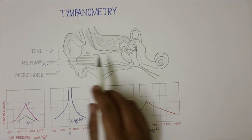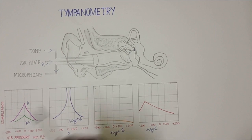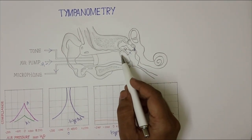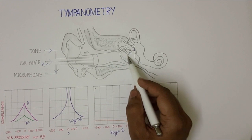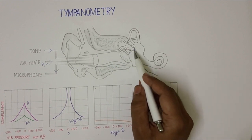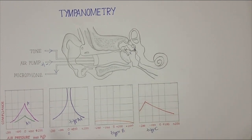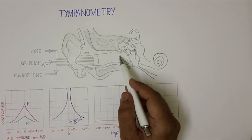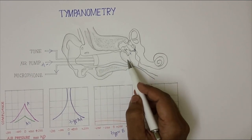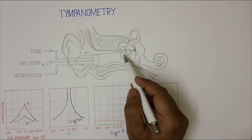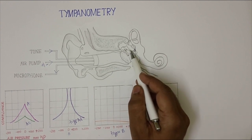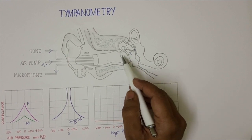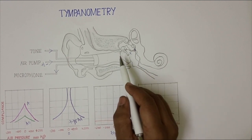Before going to the tympanometry, as you know, the sound transmitted to the external otric canal falls on the tympanic membrane, then goes through the ossicles and finally to the cochlea. When the sound is going through the external otric canal, falls on the tympanic membrane and goes through the ossicles, these tympanic membrane and ossicles produce certain resistance for the sound transmission. This is called impedance.